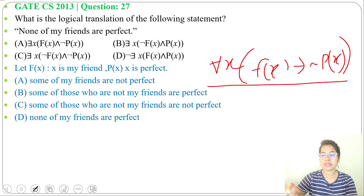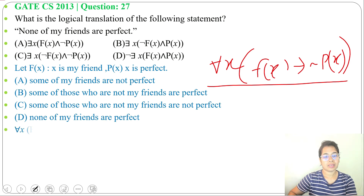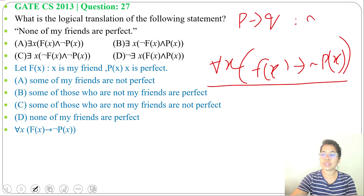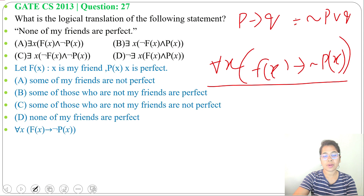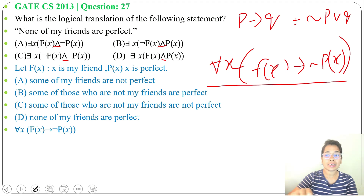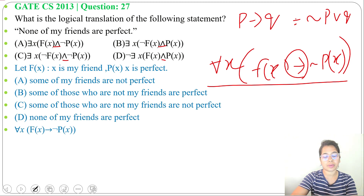So this will be our formula: for all x, if x is my friend, then x is not perfect. Now, we can write p implies q as negation of p or q. So, we can write negation of f(x) or negation of p(x). Since all options are in AND format, we are trying to write this in AND format — and here we got an implication which we are converting.